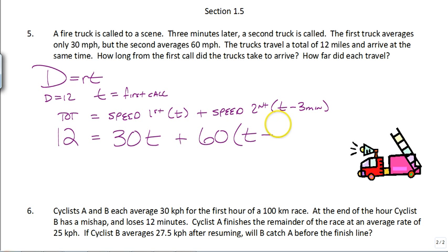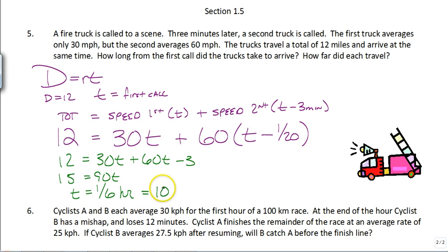And that's the trick. Those are the little details you need to watch out for when you're working with these challenging word problems. Because once you catch that, the rest of the problem really isn't that bad. So, we're just going to distribute the 60. That's going to give us 12 is equal to 30t plus 60t minus three. 15 is equal to 90t. So, t is equal to one-sixth of an hour. Now, we know that's equal to 10 minutes, but this problem is working with miles per hour, so you must be careful. So, how long did it take? 10 minutes or one-sixth of an hour. So, now we have to figure out how many miles each one traveled.